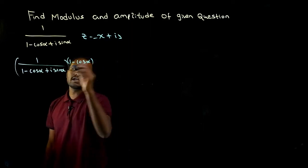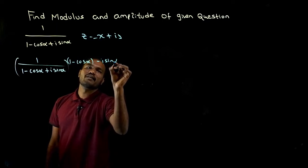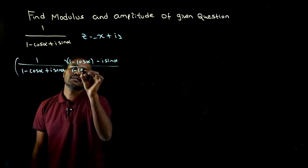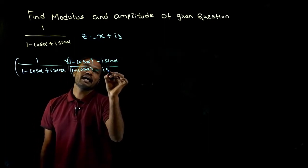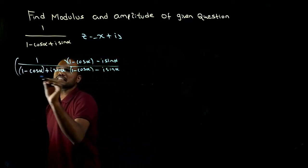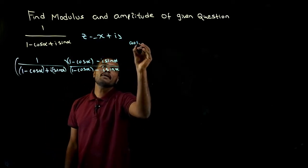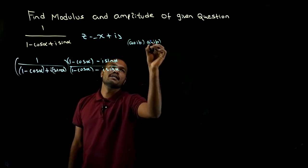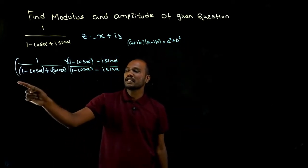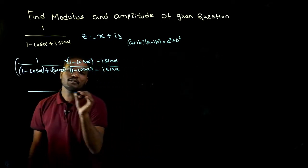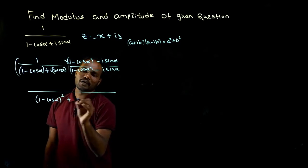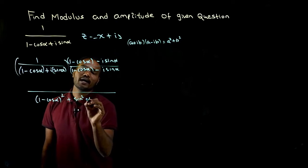The real part is one minus cos alpha. The imaginary part is negative i sine alpha. So in the numerator we take one minus cos alpha minus i sine alpha, and in the denominator we take the same thing: one minus cos alpha minus i sine alpha. If we consider this as a and that as b, it is in the form of a plus ib times a minus ib, which equals a squared plus b squared.